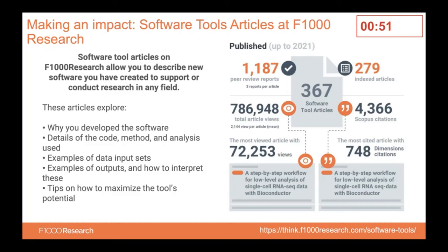On the top right, you can see we've now got 279 of these indexed — they're only indexed once they've passed peer review. On average, our software tools articles have been viewed 2,000 times, so we've had over a quarter of a million views in total. To put that in context, it's about twice the average views compared to a standard research article on F1000 Research.